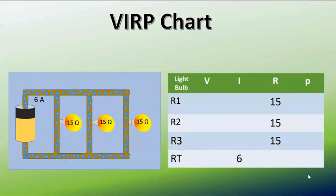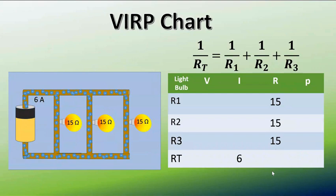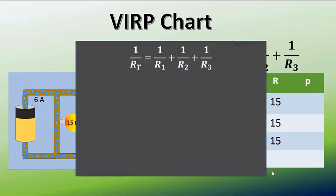I'm going to do one more example, this time with three light bulbs. And if you look at the VIRP chart, we're kind of stuck now. The only thing that we can do is add the resistors together. In parallel it's not a simple addition, we have to use the formula and so we'll do that right here.